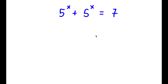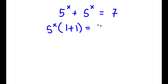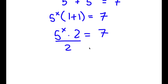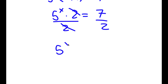In this problem, I have 5 to the power of x plus 5 to the power of x equals 7. To solve this, I'm going to factor out 5 to the power of x. So I have 5 to the power of x times (1 plus 1) equals 7. Since 1 plus 1 is 2, I have 5 to the power of x times 2 equals 7. Dividing both sides by 2, I get 5 to the power of x equals 7 over 2.